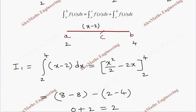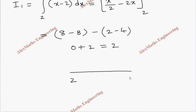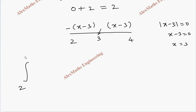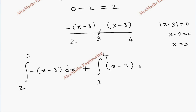For I2, we have |x minus 3| with limit from 2 to 4. Equating x minus 3 to 0 gives x equals 3, which lies between 2 and 4. Before 3 the expression is negative, and after 3 it is positive. So I2 splits into: integral from 2 to 3 of minus(x minus 3) dx, plus integral from 3 to 4 of (x minus 3) dx.